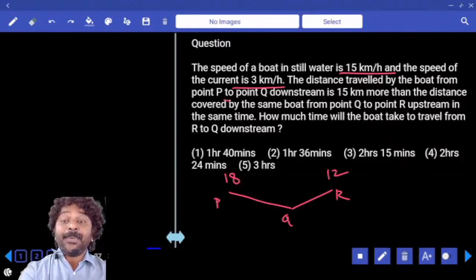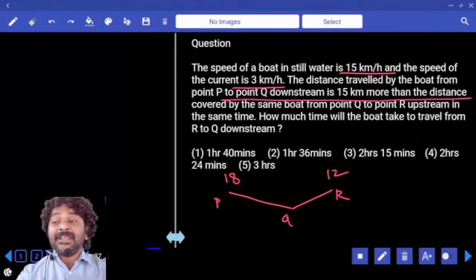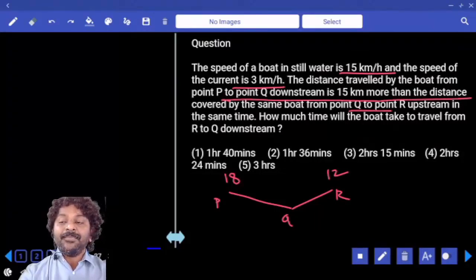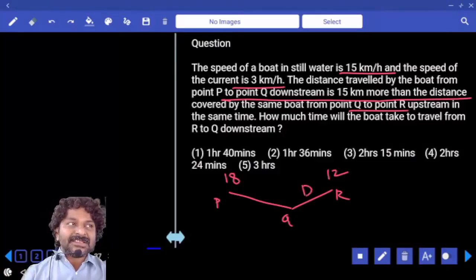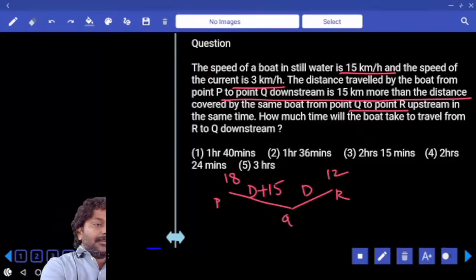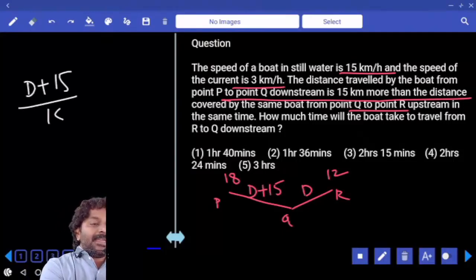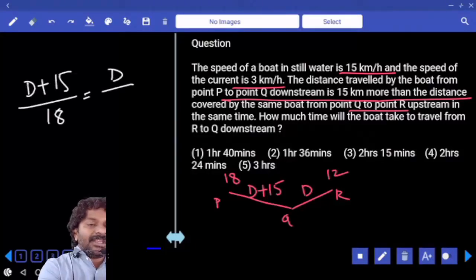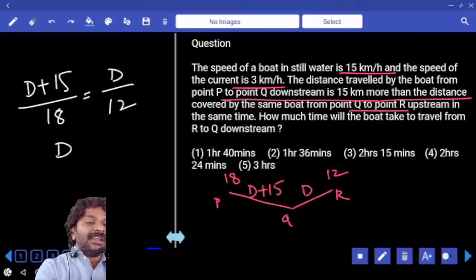Distance from P to Q is 15 km more than from Q to R. If the distance from Q to R is D, P to Q becomes D plus 15 and they said time is same. That means D plus 15 by 18 is equal to D by 12. If you calculate this, you will get the D value.